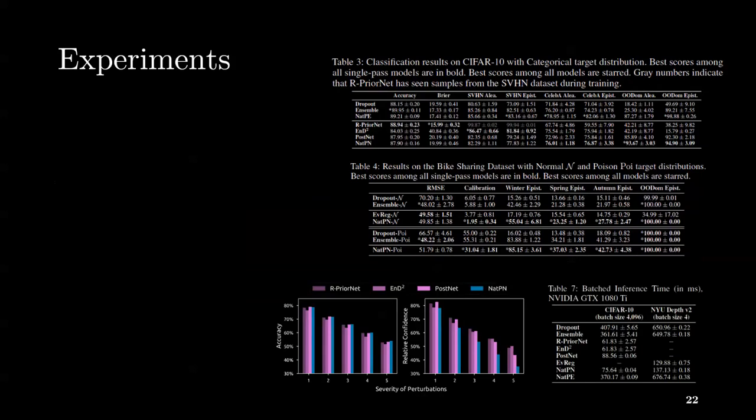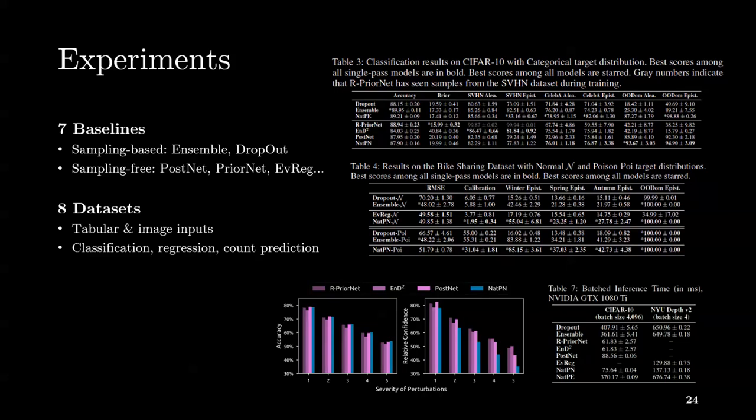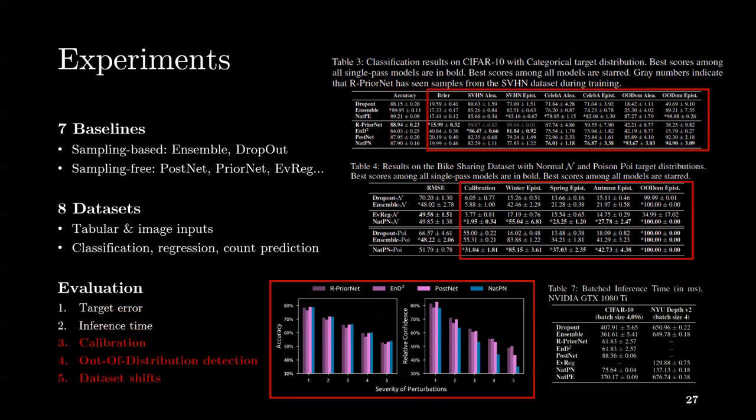And in our quantitative experiments detailed in the paper, we considered seven various baselines and eight datasets with different inputs and output types. We observed that NatPN was achieving high performance for all tasks with respect to target error, inference time, and uncertainty metrics such as calibration, OOD detection, and dataset shifts.